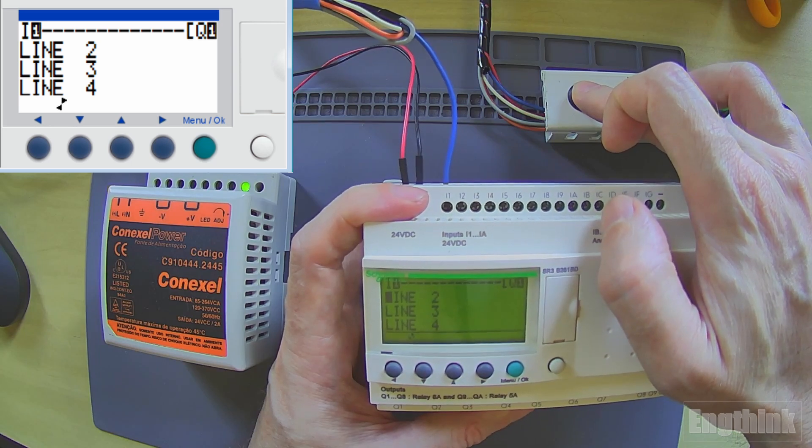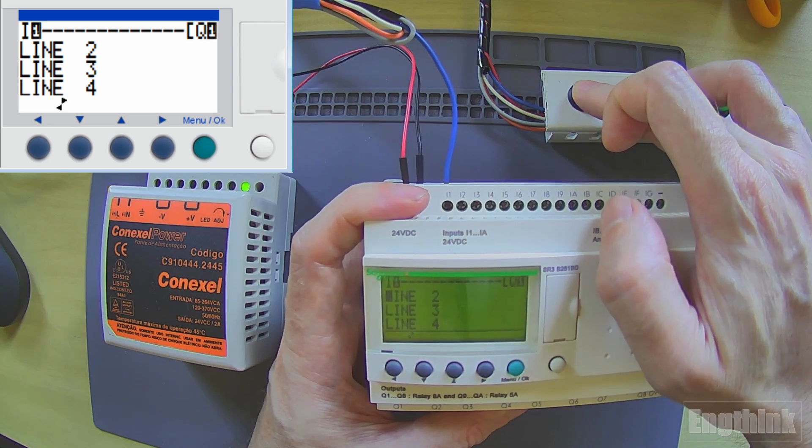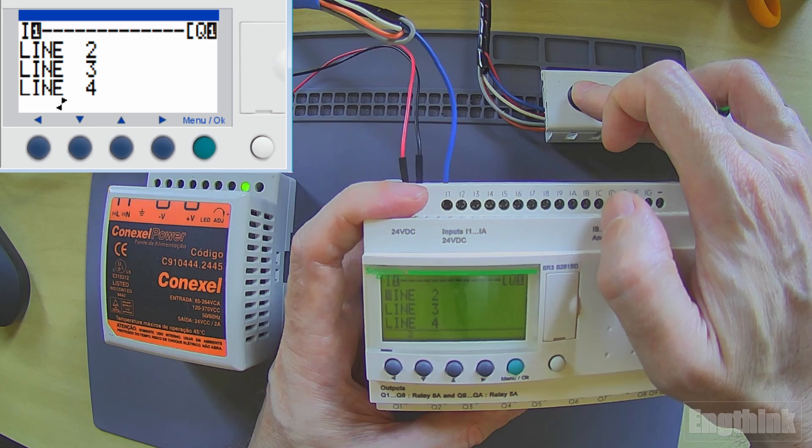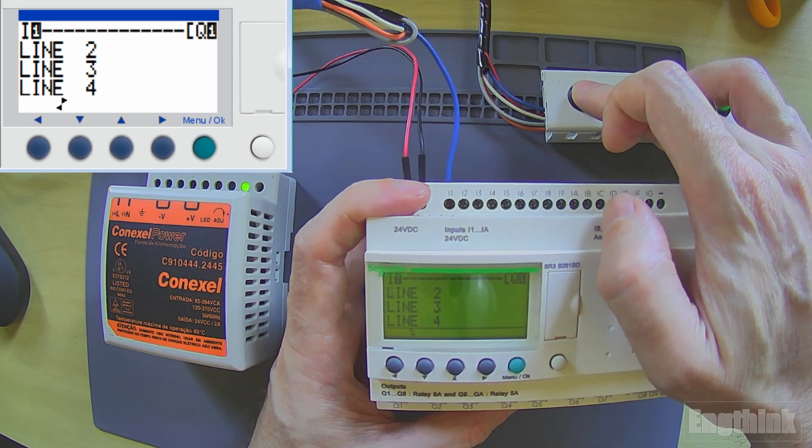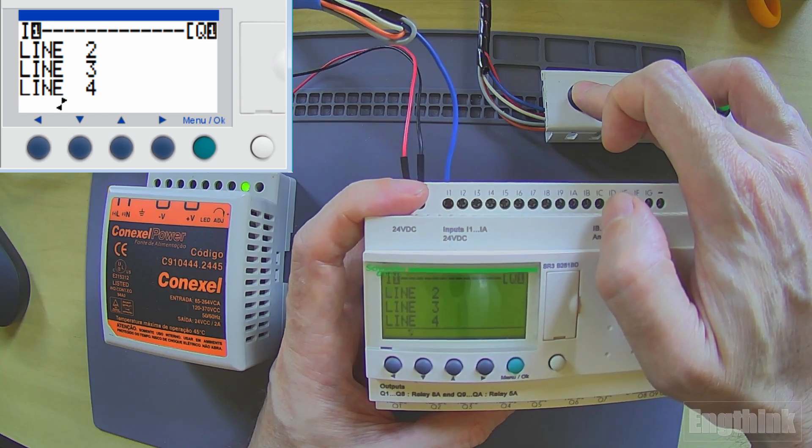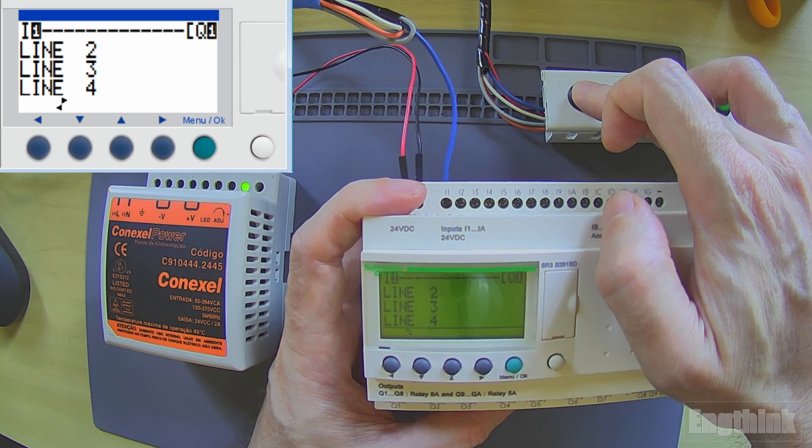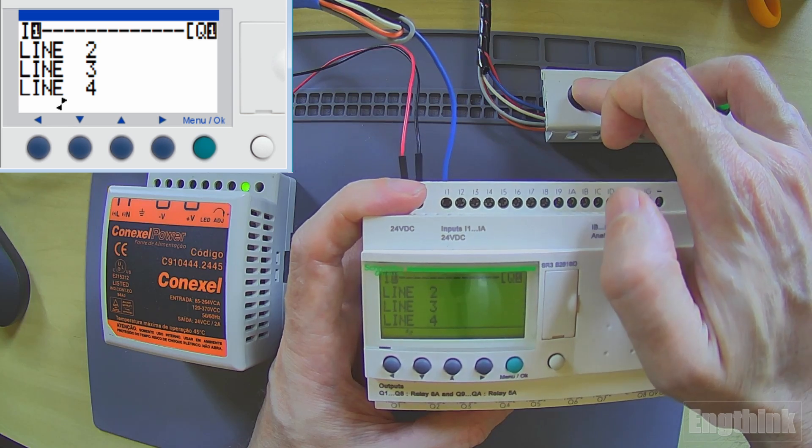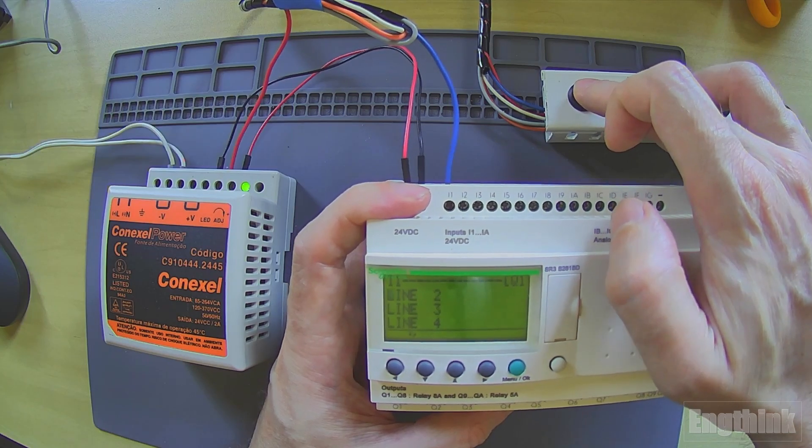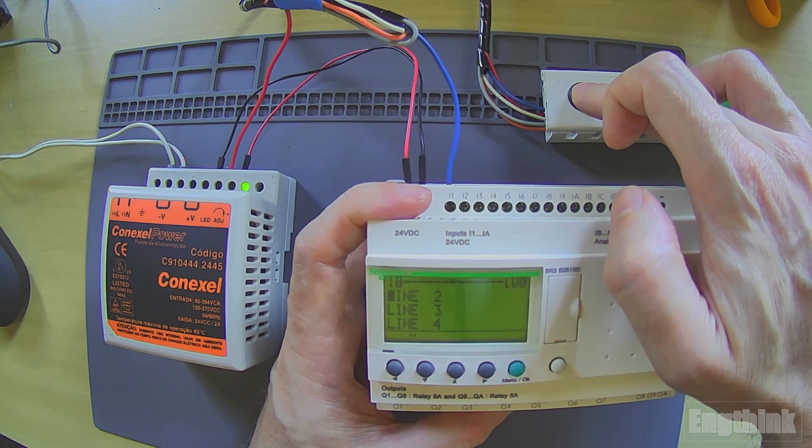We can hear the sound of the relay activating and deactivating. We can see that the program is working properly and Q1 is activated by pressing the blue button on I1.